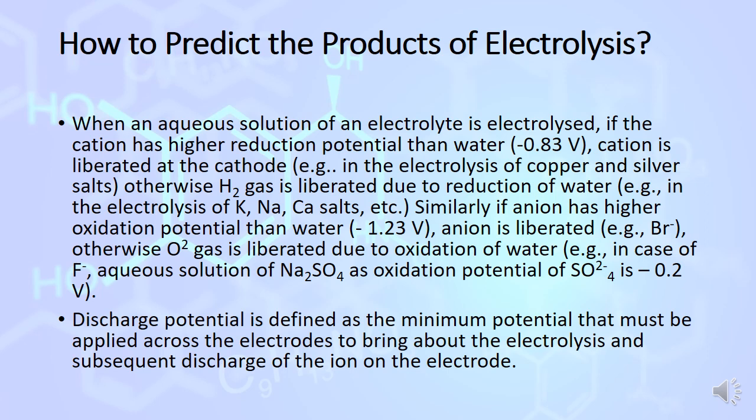Otherwise, hydrogen gas is liberated. For example, during electrolysis of copper or silver, copper and silver are collected at the cathode. But during electrolysis of sodium chloride, hydrogen gas is collected at the cathode.